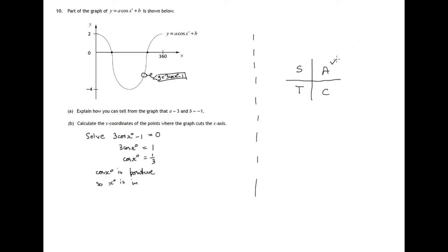So the angle is in, well all of the sine cosine and tan are positive there, only the sine positive, only the tan positive, the cosine is positive also in the fourth quadrant. So x is in first or fourth quadrant.